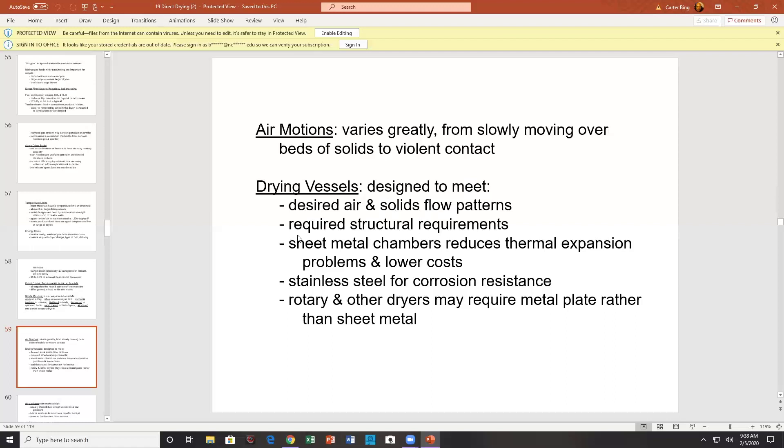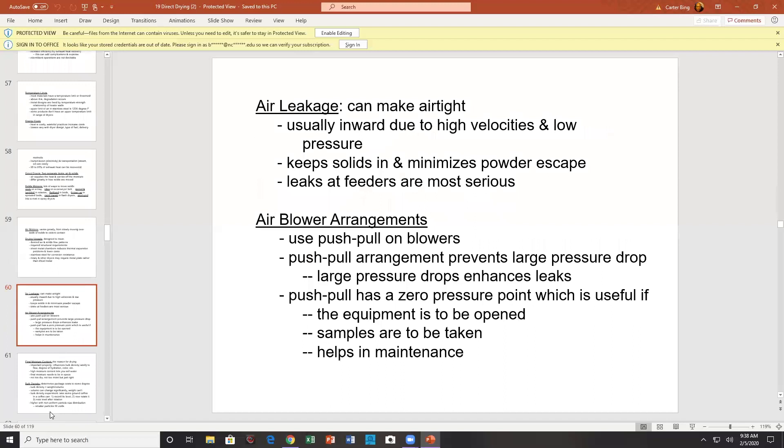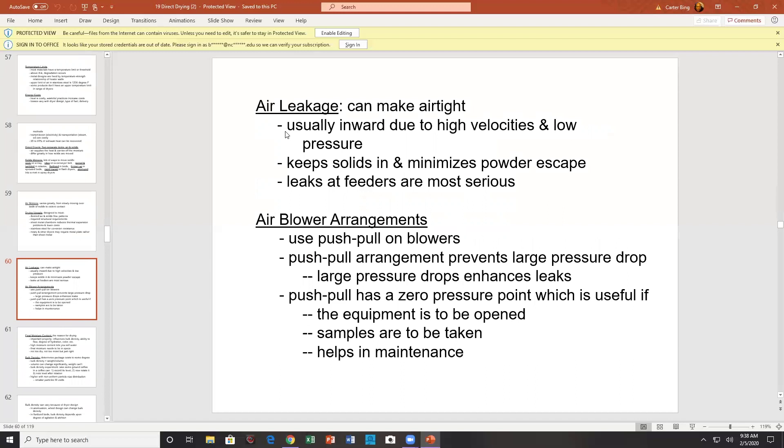Drying chambers designed to meet desired air flow patterns. Required structural requirements. Sheet metal chambers reduce thermal expansion. Stainless steel for corrosion resistance. Air leakage, you can expect 30% air leakage. However, you could potentially make it air tight. 30% air leakage is not abnormal. Keep solids in. Minimize powder escape. Leaks of feeders are probably the most serious part. Push-pull rearrangement on blowers. Push-pull has a zero pressure point. This may be a place where you would enter your dryer. Helps in maintenance, with samples to be taken, equipment to be opened, perhaps.